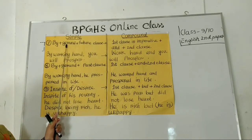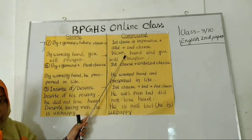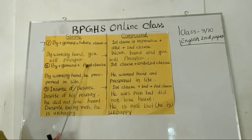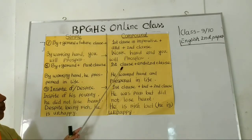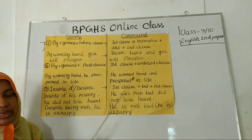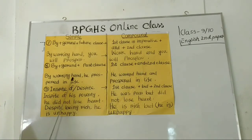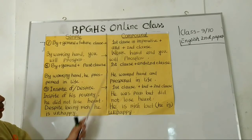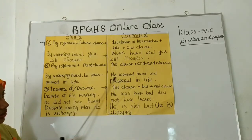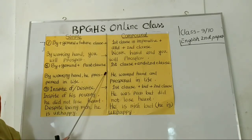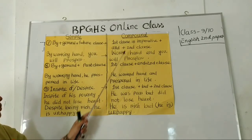Remember: if you find by plus gerund followed by a future clause, you write the first clause as an imperative sentence. But in the next rule, if you find a past clause after the gerund, there is a change — you cannot use an imperative sentence. Instead, write the first clause as an affirmative or statement sentence. Example: 'By working hard, he prospered in life.' Here the second clause is in past tense. So the compound is: 'He worked hard and prospered in life.' Always remember the difference between the future clause case and the past clause case.